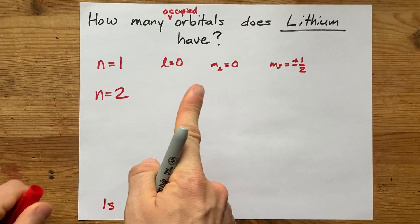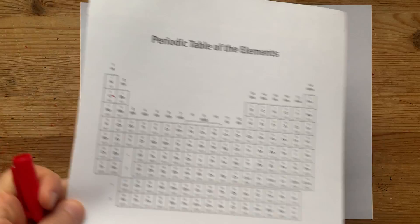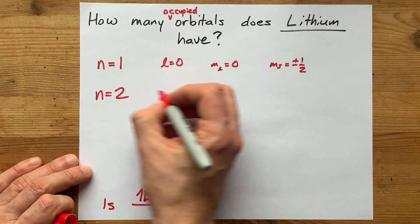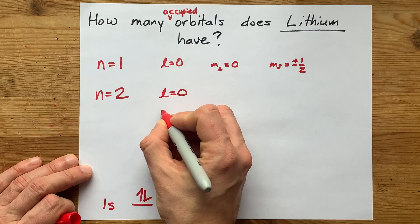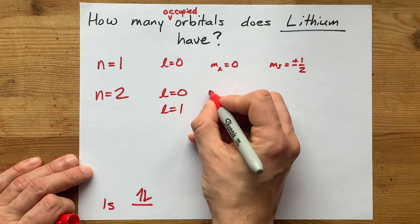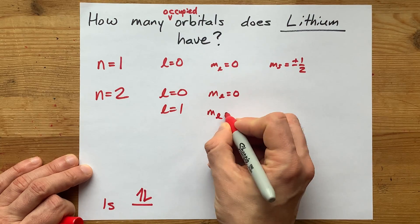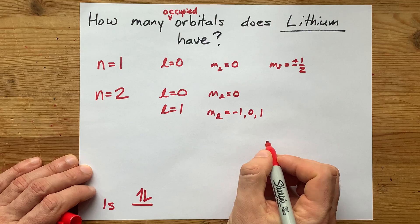Lithium has one electron in its second shell, right? It's in the first column of the second row. Now, when n equals 2, l can be 0 or 1. When l is 0, ml can be 0. When l is 1, ml can be negative 1, 0, or 1.